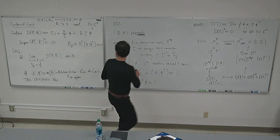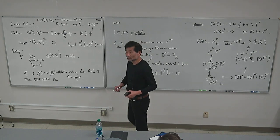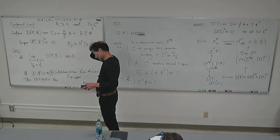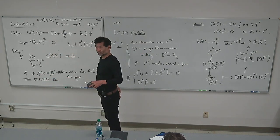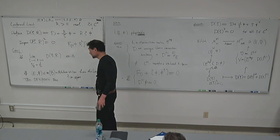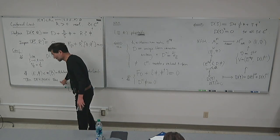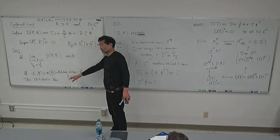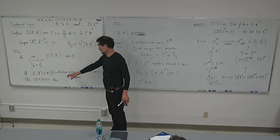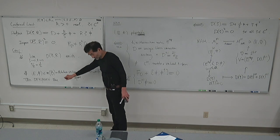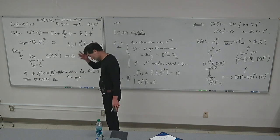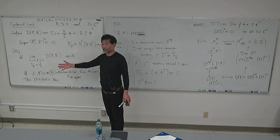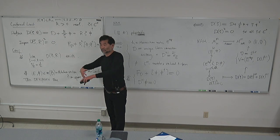Let me explain the following situation as a remark. Something is completely trivial. Consider (E, φ) in the Hitchin moduli, and E itself is stable. One case: φ is identically zero. Let's apply this situation. Then the equation is just F_D = 0. I'm choosing φ to be equal to zero.